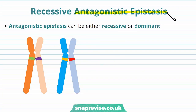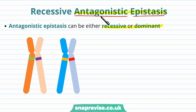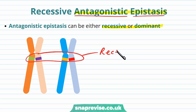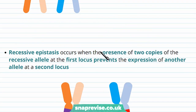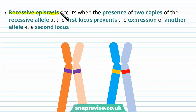Antagonistic epistasis can be divided into recessive or dominant. Antagonistic epistasis is when one gene inhibits or blocks the expression of another gene. Recessive epistasis occurs when the presence of two copies of the recessive allele at the first locus prevents the expression of another allele at a second locus.